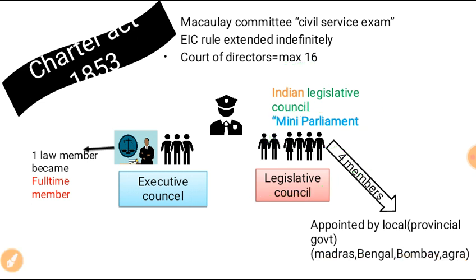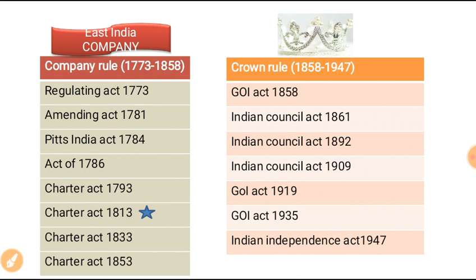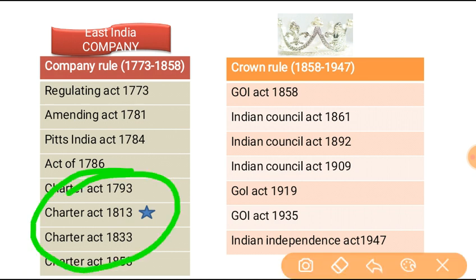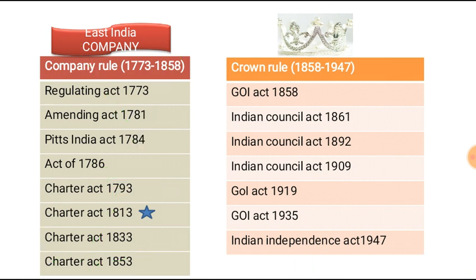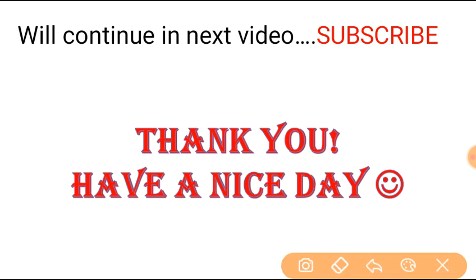So these were the important features. We have done with all 4 Charter Acts. Now the East India Company's rule will end and Crown Rule will come — the British Crown will tell the East India Company: your work is finished, we are now taking governance directly under us. We will see this in the next lecture. Thank you so much for watching.